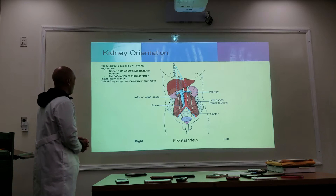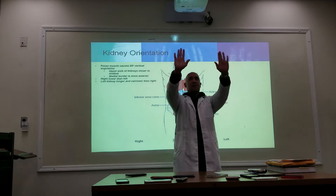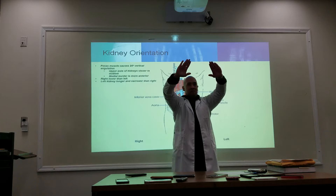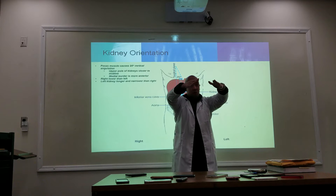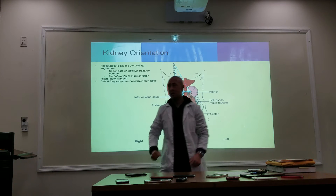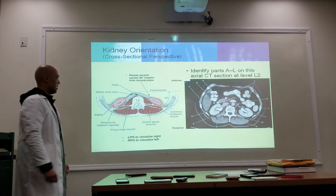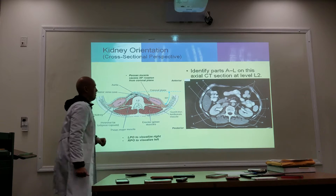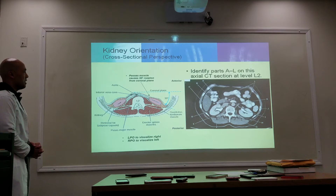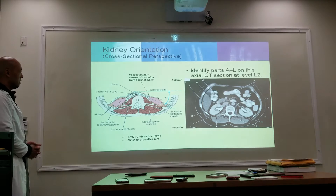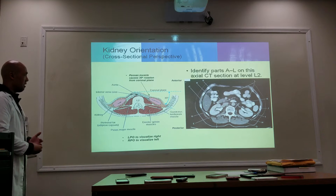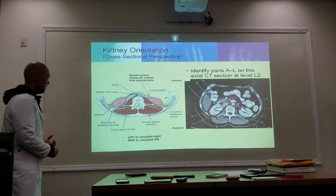The medial border is going to be more anterior. We are talking about a 30-degree obliquity of those kidneys. The psoas muscles are involved in causing the kidneys to rotate in such a way — a 20-degree vertical angulation and a 30-degree obliquity.